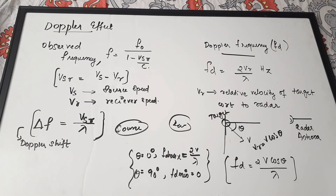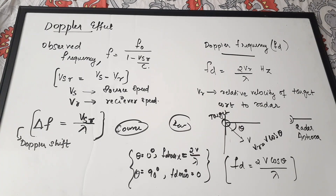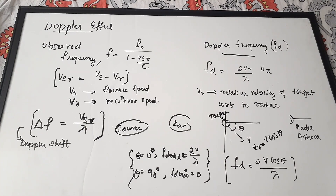In this video we have discussed what radar is and its principle, the basic block diagram, pulse repetition time, pulse repetition frequency, duty cycle, various range equations in terms of diameter and noise figure, maximum range, maximum unambiguous range, range related to time difference, blind speed, and the Doppler effect. These are the major topics to cover when preparing the radar subject. If you found this video useful, please share it, give it a thumbs up, and subscribe to the channel.